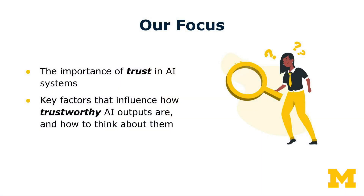One of the critical questions for the use of artificial intelligence in any serious setting is when the output of artificial intelligence can be trusted. If you can't trust what AI is generating, it's not really usable for many purposes. In this lecture, we're going to discuss the importance of trust in AI systems and some of the key factors that influence how trustworthy AI outputs are, as well as ways to think about them.